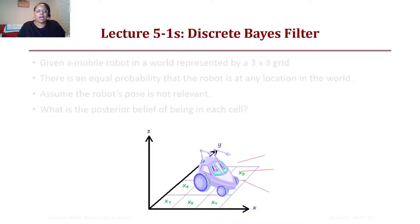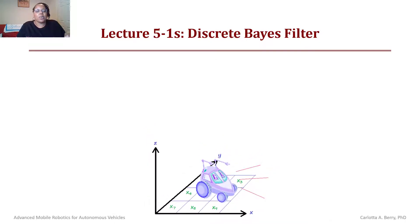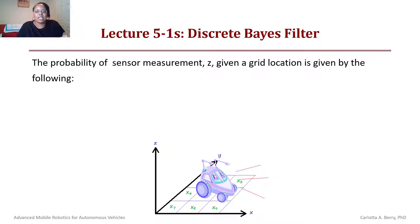The way that we're going to solve this problem is we are going to use the probability of a sensor measurement z given a grid location, which will be given by the following probabilities.